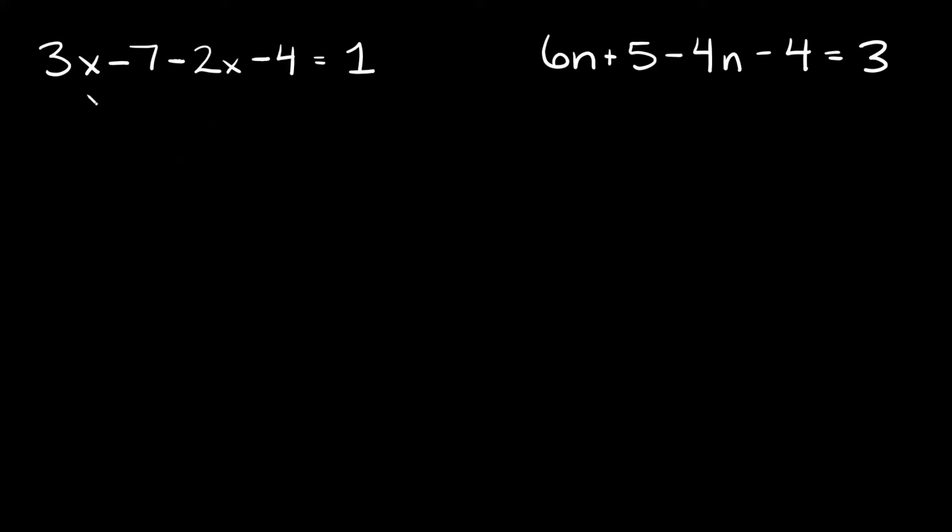So it says 3x minus 7 minus 2x minus 4 is equal to 1. How do you solve for x right here? The first thing you're going to do is combine like terms.